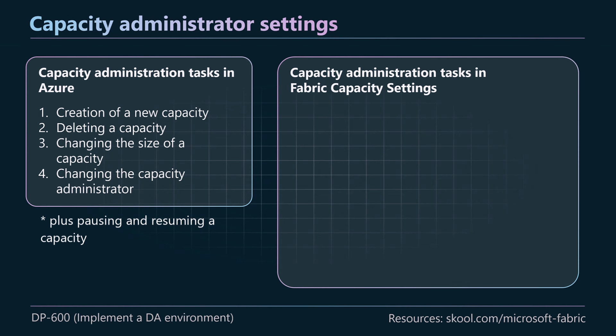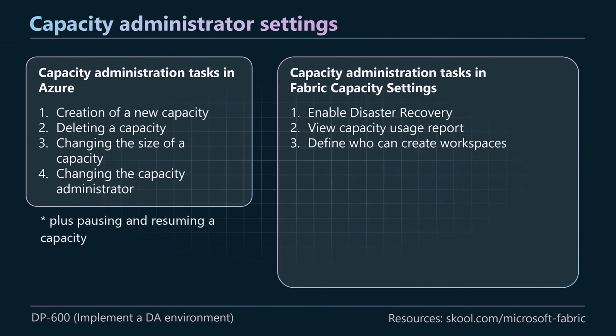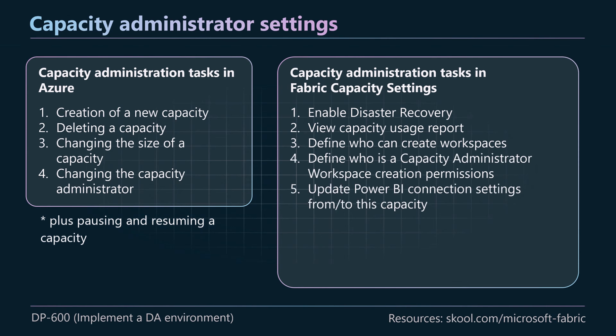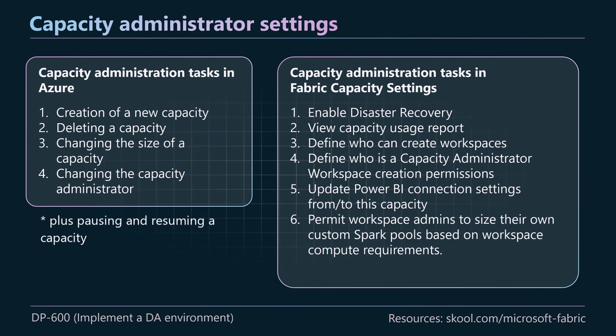Within Fabric, we can change settings for a particular capacity: enabling disaster recovery, viewing the capacity usage report, defining who can create workspaces within that capacity, defining who is a capacity administrator, updating Power BI connection settings, and permitting workspace admins to size their own custom Spark pools. You might want to limit how high workspace owners can go with their Spark pools, as that has a big impact on overall capacity usage. We can also assign workspaces to the capacity in this section.